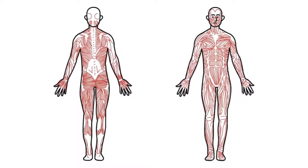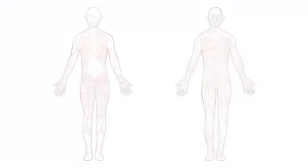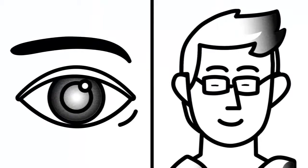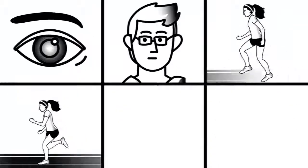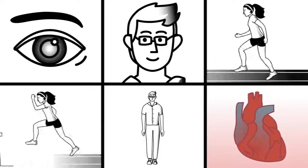This network of over 650 muscles covers the body and is the reason we can blink, smile, run, jump, and stand upright. It's even responsible for the heart's dependable thump.